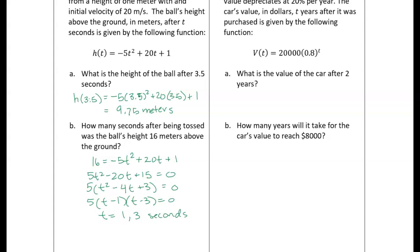That makes sense — the ball goes up and then comes back down, so it passes 16 meters at two different points. This height function takes an input of time and gives height. If we want an inverse, it would take height and give time — but it can't be a function because a function must have a unique output for every input, and here one height input gives two different time outputs. So there's a problem.